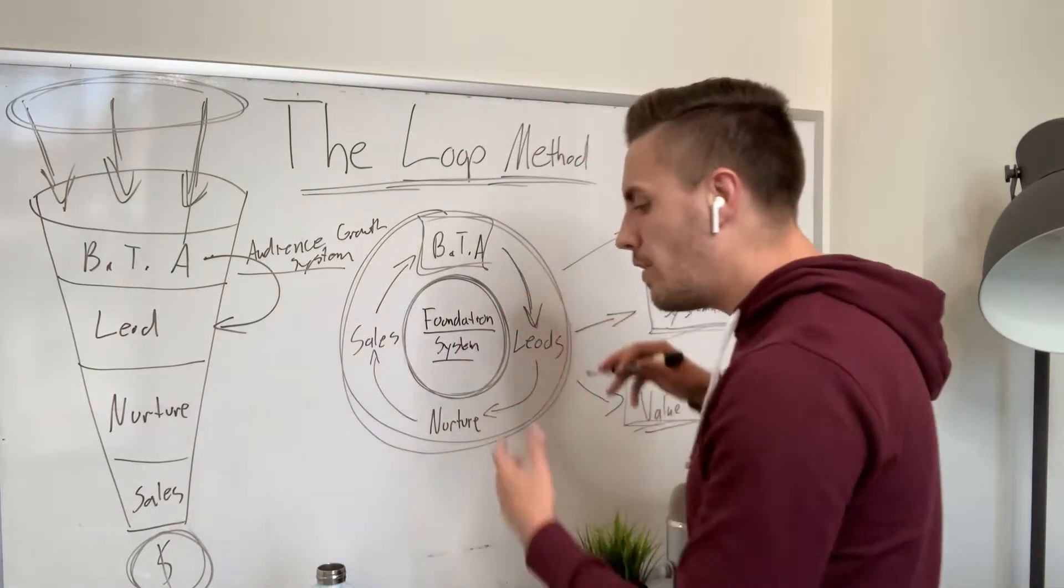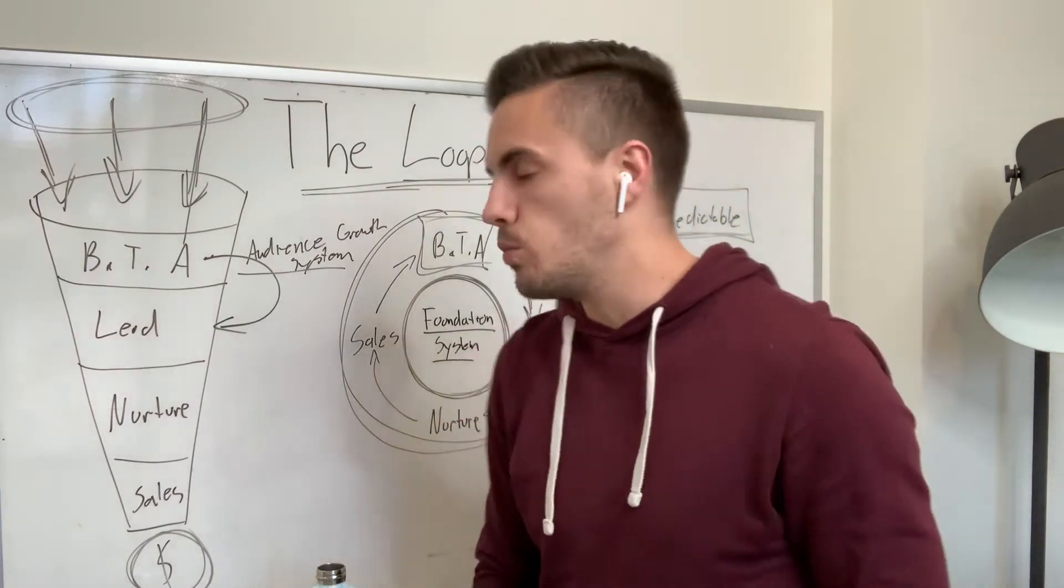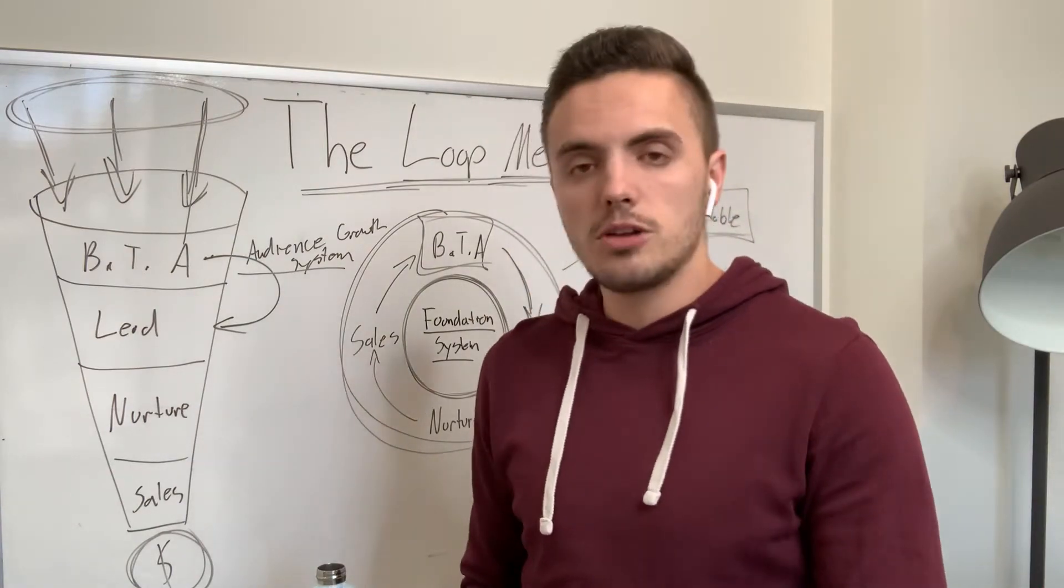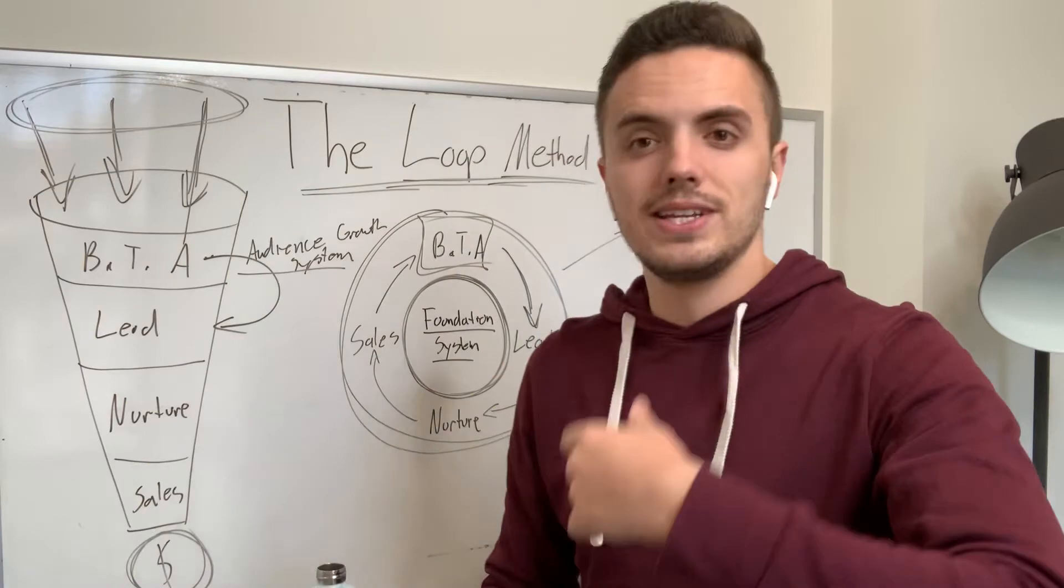So what we want to do is how do we get someone to trust us initially? Well, let's give them something free, something valuable. We call them value pieces here at CCI, something that's going to provide value tangibly, they're going to be able to take something and actually implement it and get a really good result.